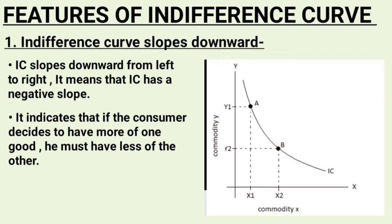The most important thing is that good X and good Y are of the same nature. Both goods together provide satisfaction — when satisfaction from one increases, satisfaction from the other decreases. This indicates an inverse relation between any two commodities in the combination.